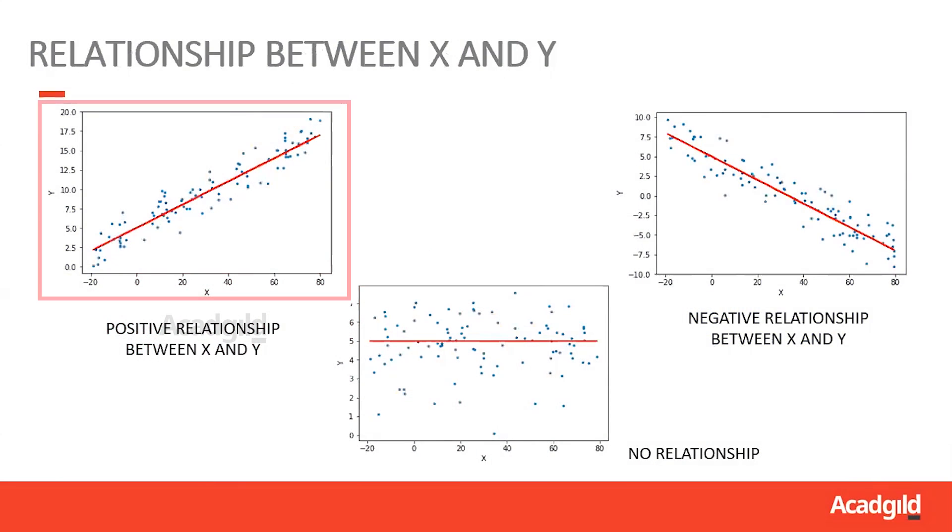So how do these coefficient values describe the relationship between x and y? Let's look at positive values, negative values, and zero values for the coefficient b1. If the slope is positive, then that models a positive relationship between x and y, where when there is an increase in x, there is also an increase in y. If the slope is negative, then that means when there is an increase in x, there is a decrease in y. And when there is no relationship, the slope has a value of zero, and this cannot be modeled by linear regression.